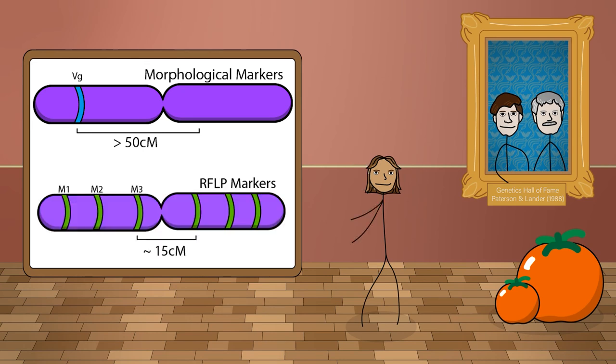Patterson and Lander broke through this barrier with RFLP markers. Since these markers were simple nucleotide polymorphisms, they were much more ubiquitous than morphological markers, which required functional changes to a gene. The abundance of information provided by RFLPs made interval mapping and maximum likelihoods feasible for the first time, and Lander's methods remained prominent in the field.